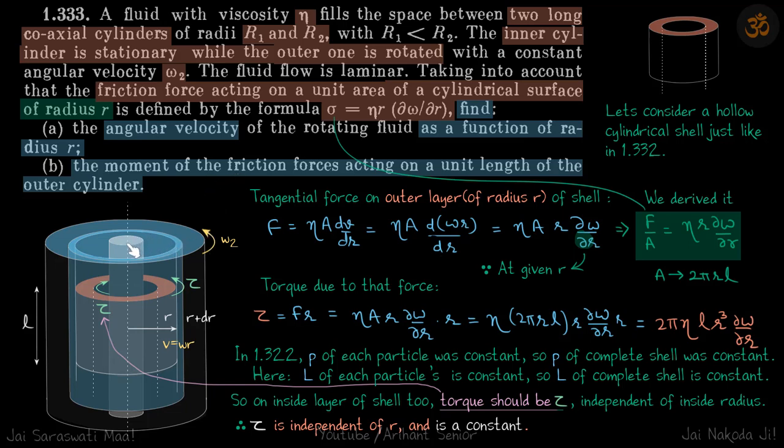So first, let's find omega at a distance r. For that, we are going to use the same approach which we used in previous problem. So we are going to find the tangential force. And once we find that, we can multiply that by distance r to get the torque.